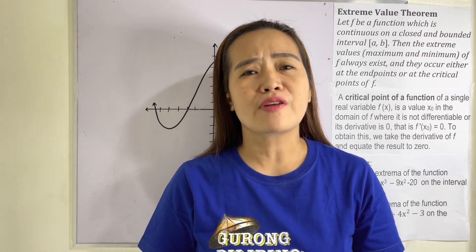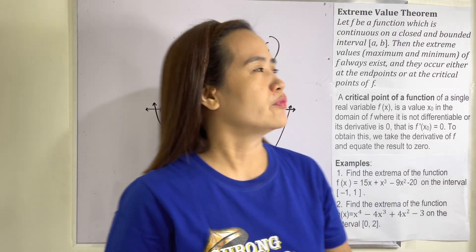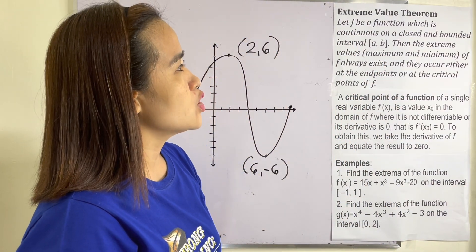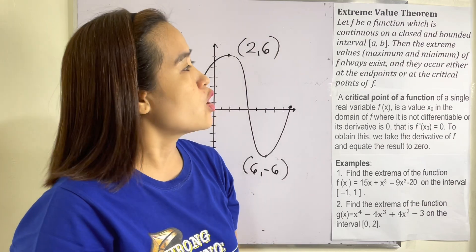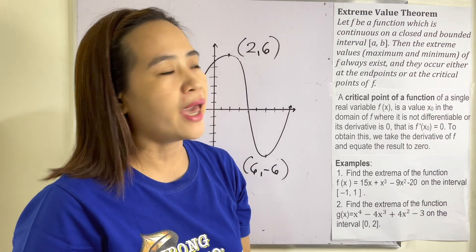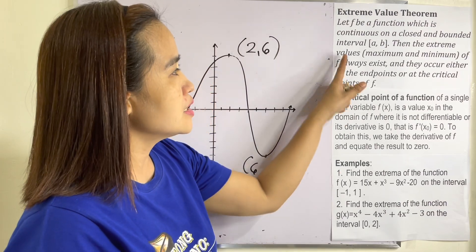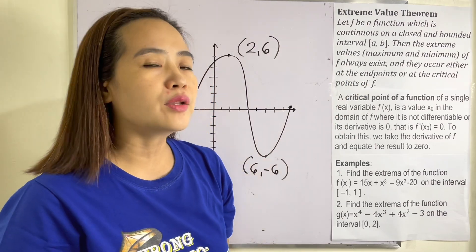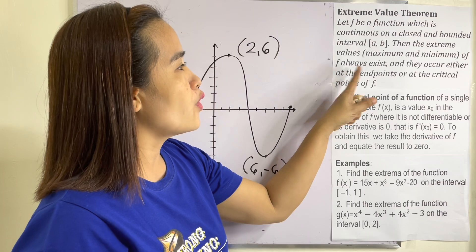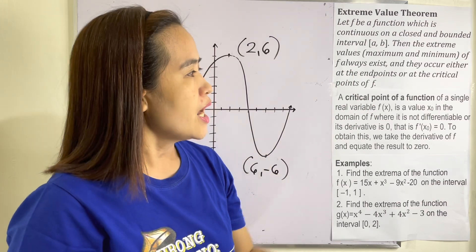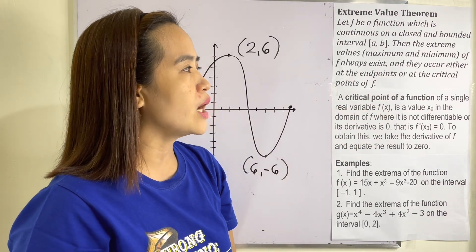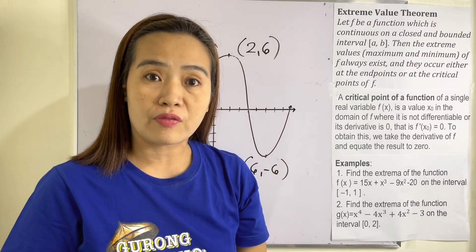What is the Extreme Value Theorem? Let F be a function which is continuous on a closed and bounded interval [A, B]. Then, the extreme values — maximum and minimum of F — always exist, and they occur either at the endpoints or at the critical points of F.